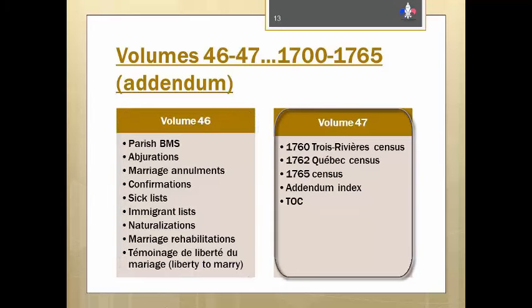Volume 47 contains the 1760 census for Trois-Rivières and the 1762 census for Quebec and a partial census from 1765. That is followed by the general index for the last two volumes. In the very back of Volume 47 is a table of contents showing all the volumes in which each parish can be found.